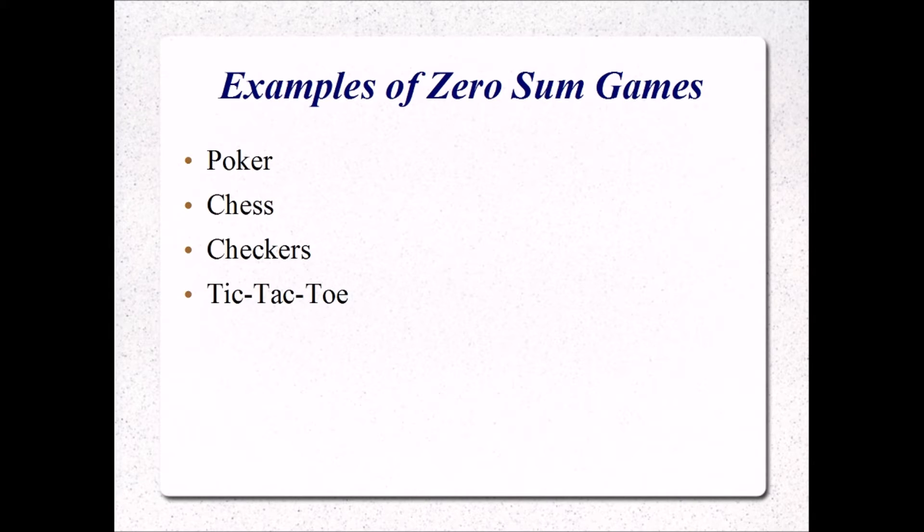Chess and checkers, there's a winner, there's a loser. There's no ties. So in chess and checkers, one player receives all the utility, the other player receives none.